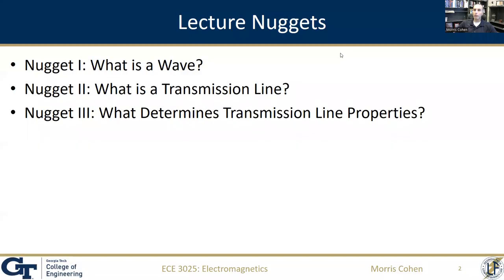So let's introduce this concept in three pieces. The first is: what is a wave? We'll talk about this very generically, not specifically around electromagnetics, but what is a wave in general? Next, we're going to specify a transmission line, which is a way of carrying electrical waves from point A to point B. And finally, in part three, we're going to talk about how transmission lines work and what specifies their behavior.